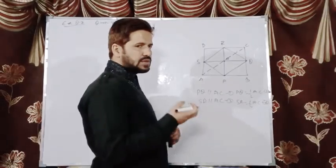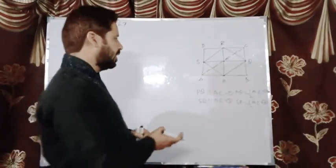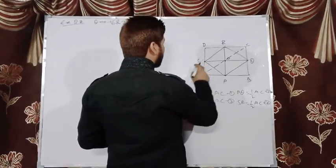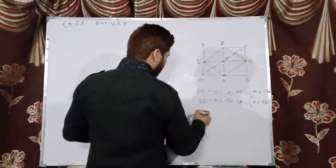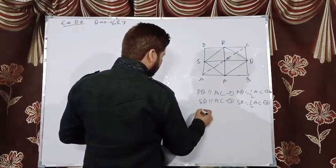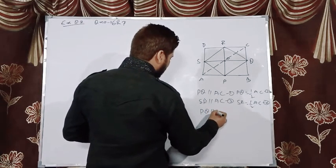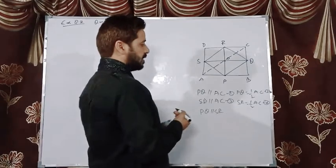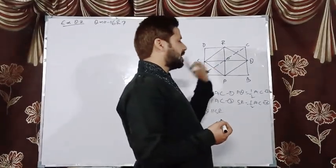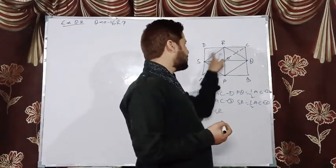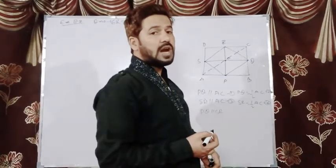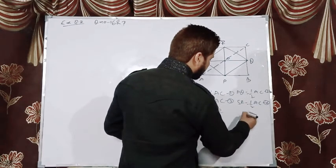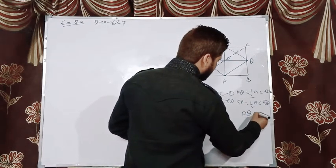Things which are equal to the same thing are equal to one another. Here PQ is parallel to AC and SR is parallel to AC. So from equations 1 and 3, we come to know that PQ is parallel to SR. And from equations 2 and 4, since PQ and SR are both halves of AC, therefore PQ is equal to SR — equation star.